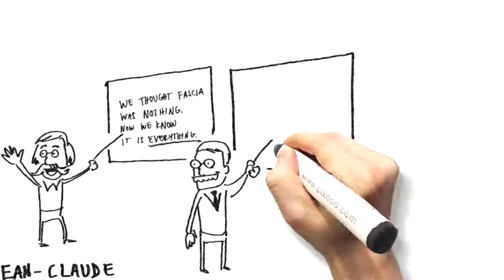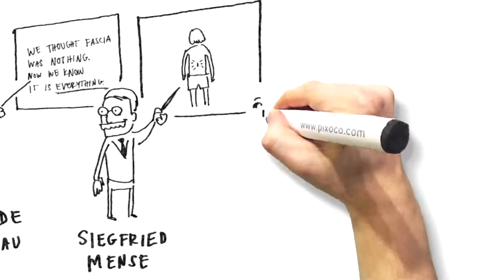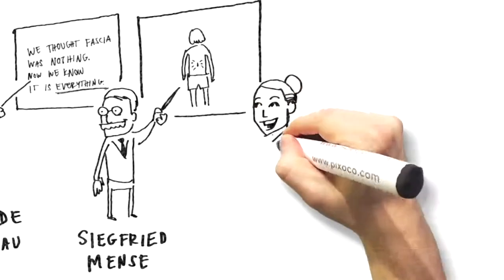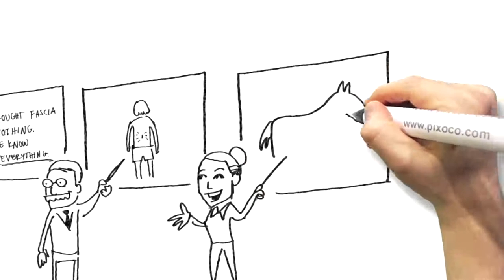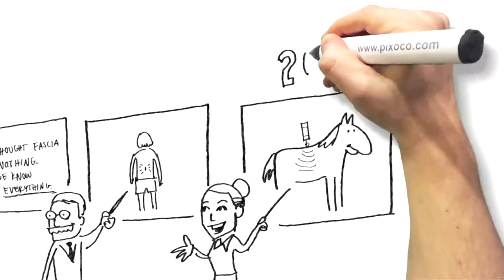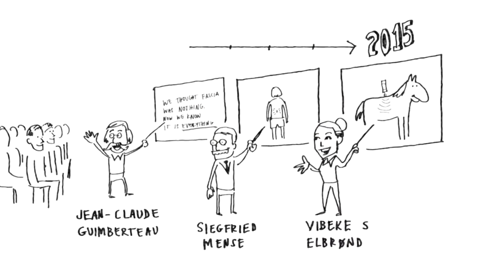Anatomy professor Siegfried Mense showed that inflammation in the fascia is a source of pain in the lumbar spine. At the 2015 conference, veterinarian Wiebeck Elbrunn presented that even horses have the same fascia structure as humans, as well as how mechanical treatment affects the connective tissue by turning off pain receptors, increasing circulation, and reducing inflammation.